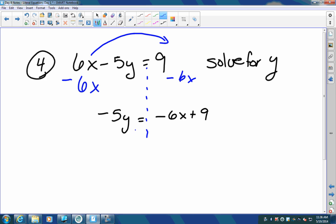I'm going to divide by negative five. You can do this a couple different ways. I'm going to write it as Y equals, well, negative six divided by negative five. Negative and negative is a positive. Six over five X minus nine over five.